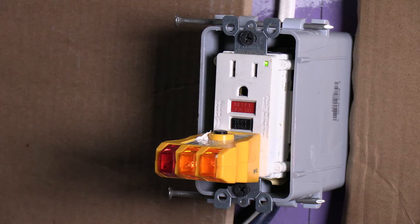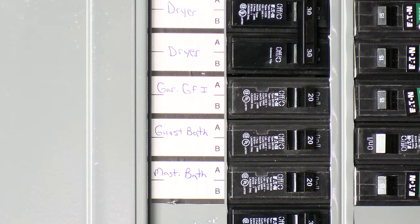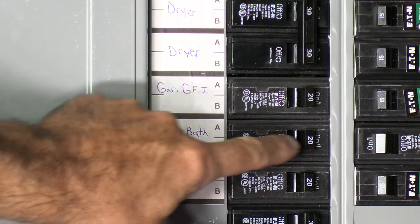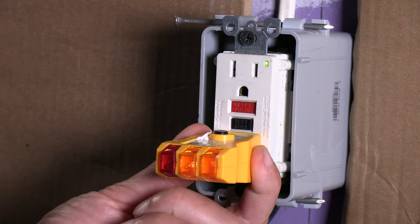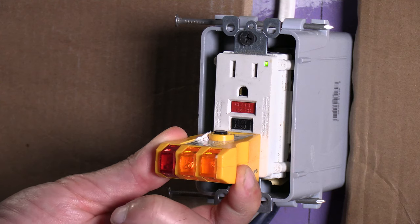So the first thing you're going to want to do before starting a project like this is make sure your power is turned off. Go and find the breaker box and figure out which breaker goes to the plug that you're wanting to work with and turn that breaker off for safety. And then once you do that, you can come back to the plug and use one of these voltage testers to verify that your plug is off.